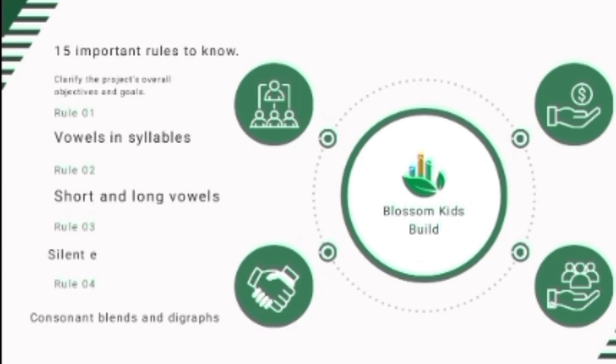Syllables are units of sounds in a word. A syllable is a single uninterrupted sound produced when pronouncing a word. For example, when we pronounce the word 'elephant,' there are single uninterrupted sounds we produce: e-le-phant.